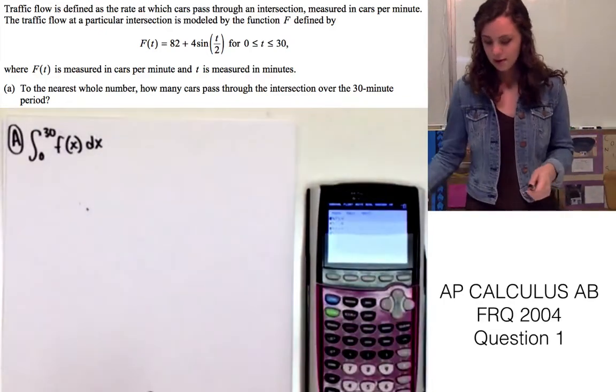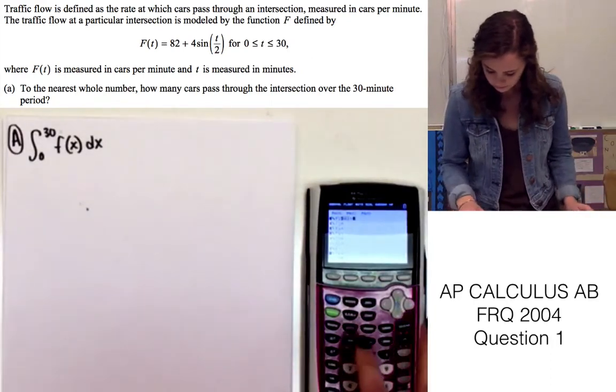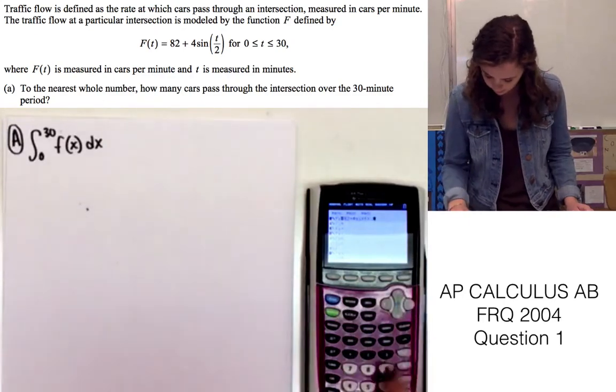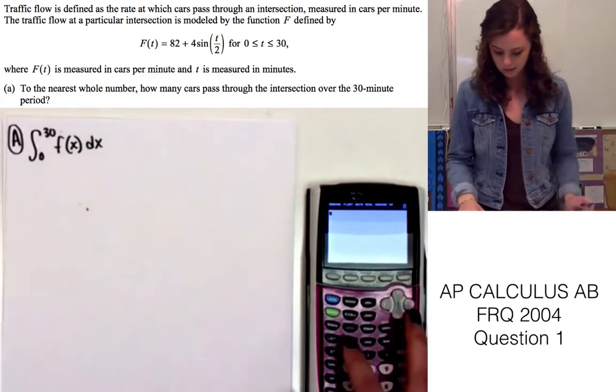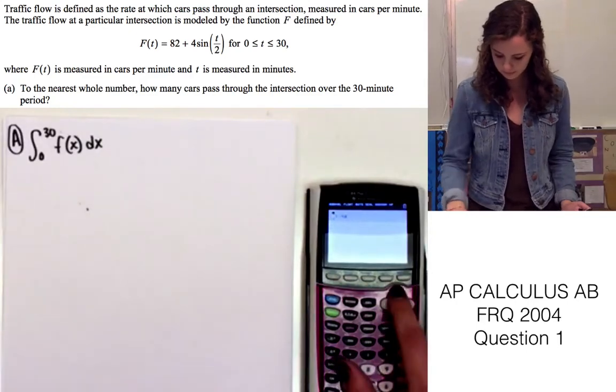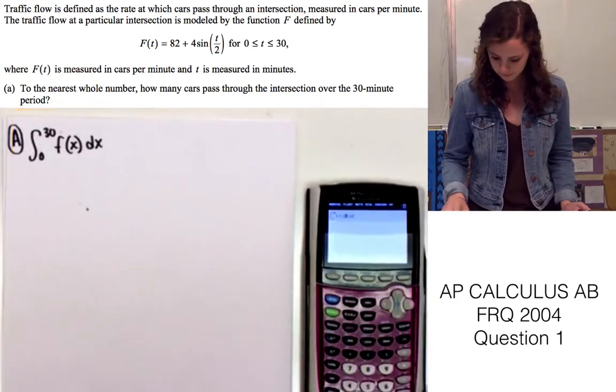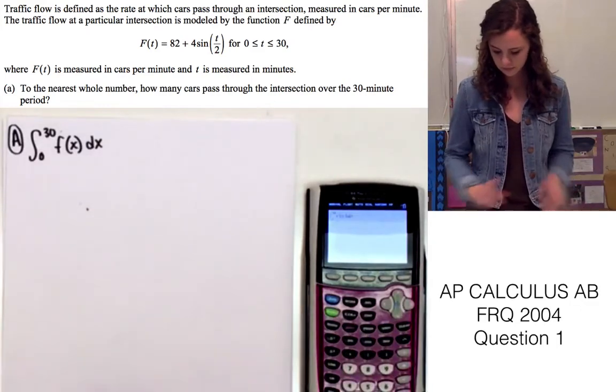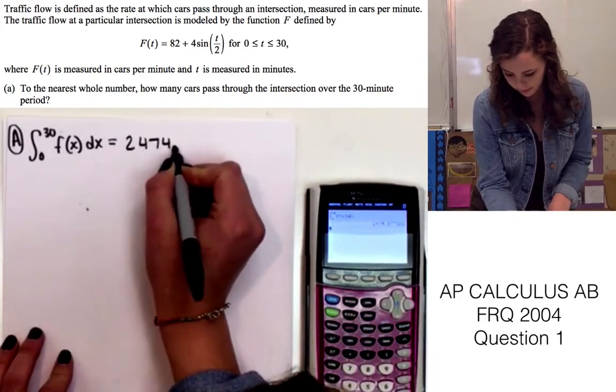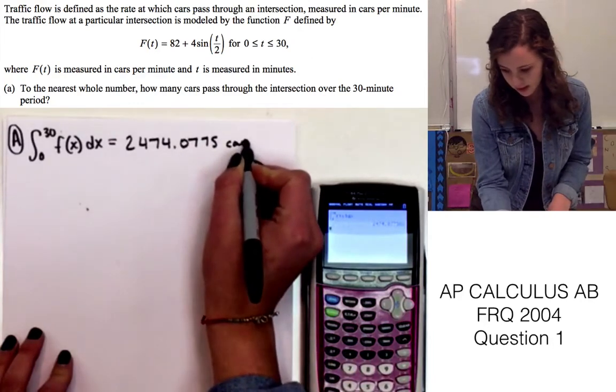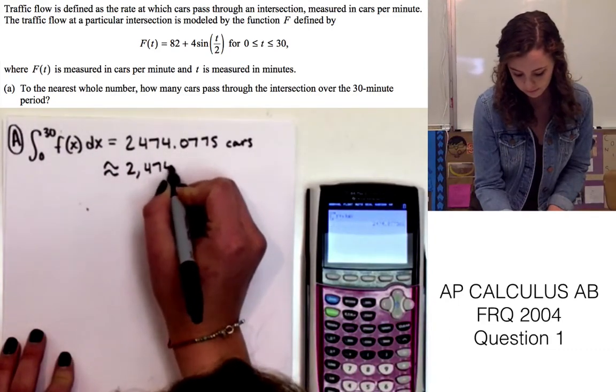So let's go ahead and put the function f(x) into the calculator for y1. So 82 plus 4 sine of x over 2. All right, so now we'll use the math function to find the value of this, which is equal to 2,474.0775 cars. And it wants the approximate value, so the official answer is going to be 2,474 cars.